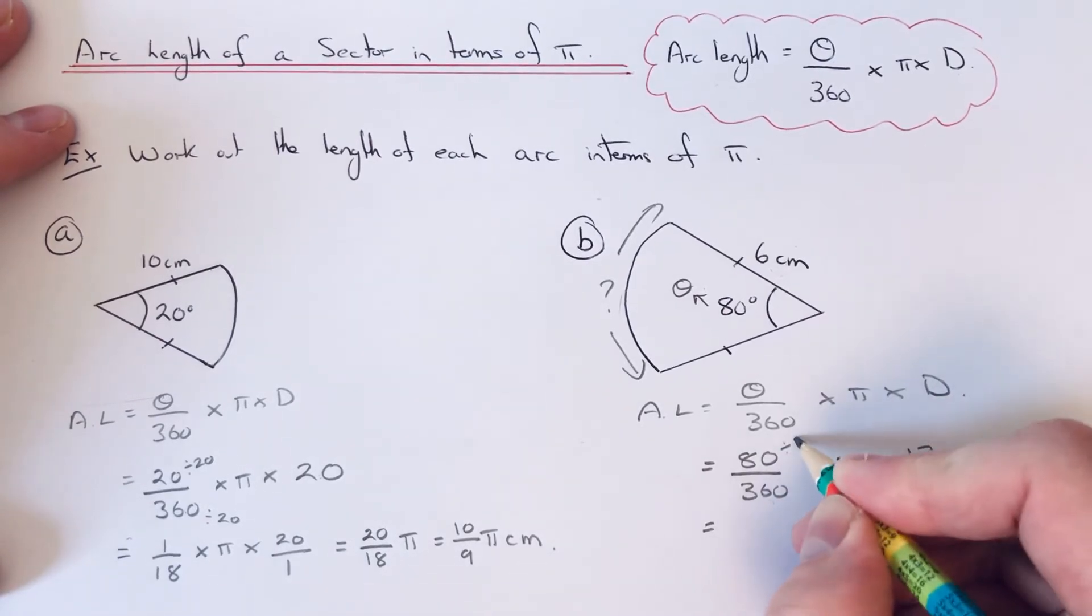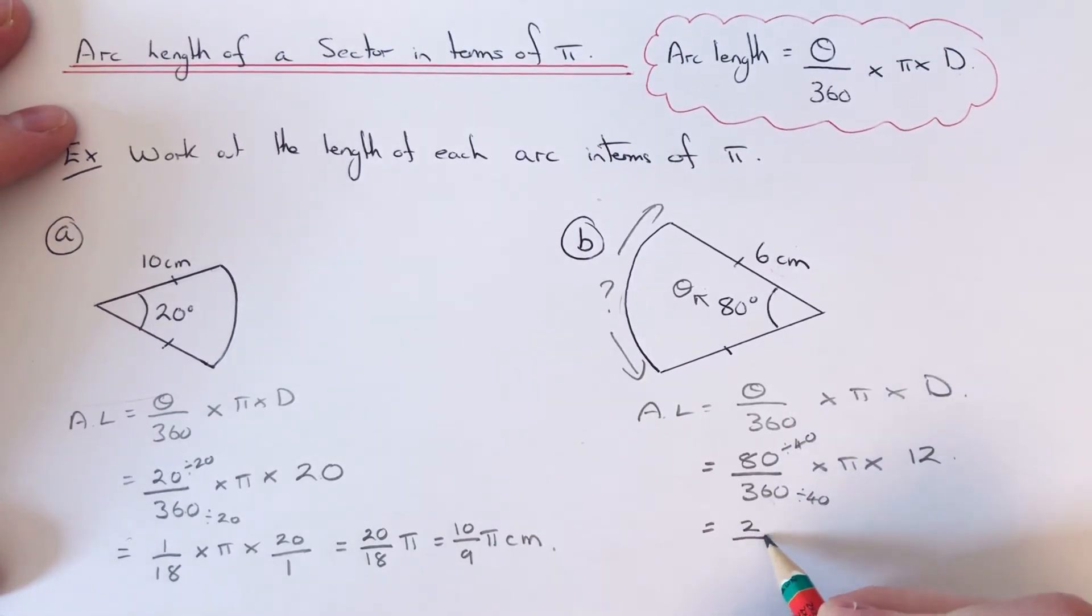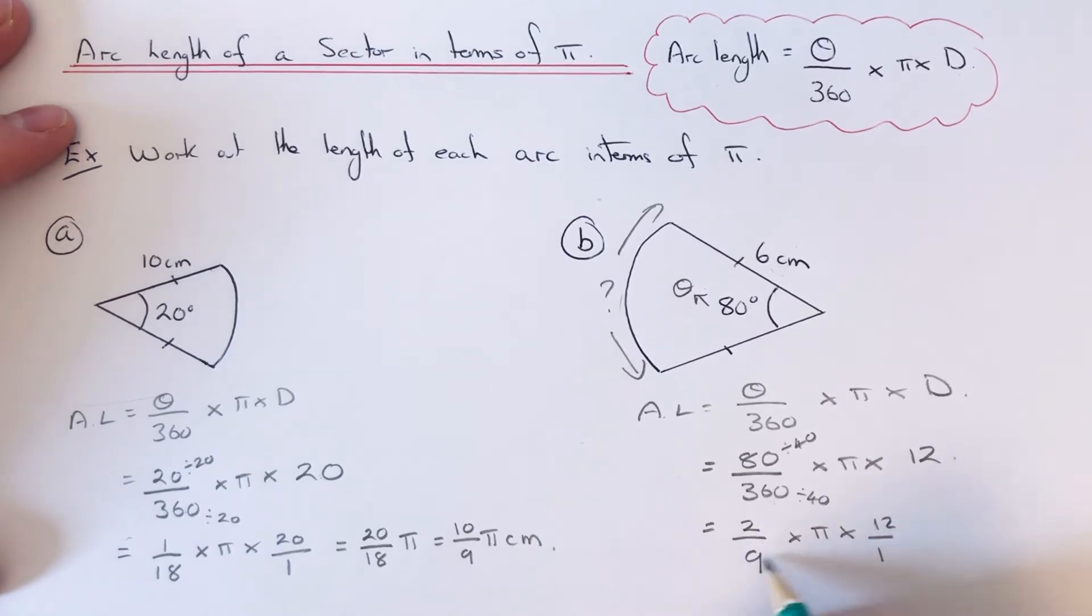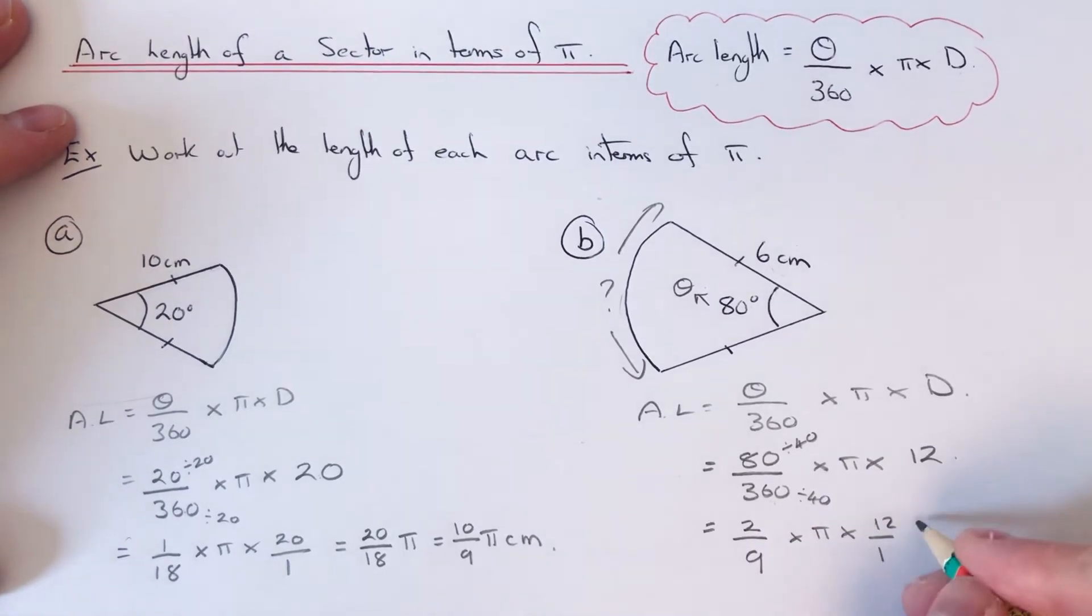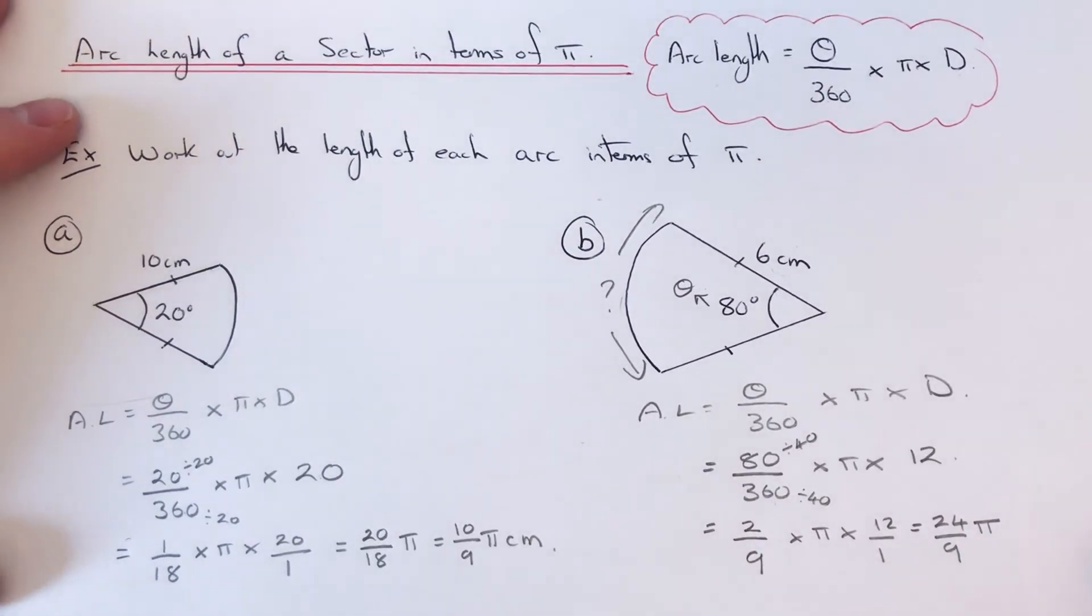We can simplify this fraction at the front because they're multiples of 40. 80 ÷ 40 = 2, 360 ÷ 40 = 9. We can write 12 as 12/1, so we can multiply these two fractions together: 2 × 12 = 24, 9 × 1 = 9, and then put the π on at the end.